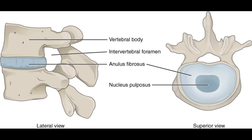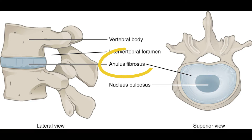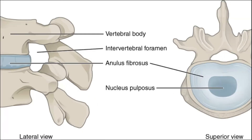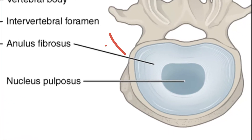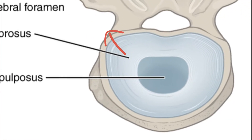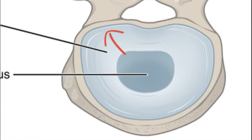In the vertebral body, you have in the centre the nucleus pulposus, surrounded by the annulus fibrosus. When you have disc herniation, the nucleus pulposus protrudes through the annulus fibrosus.